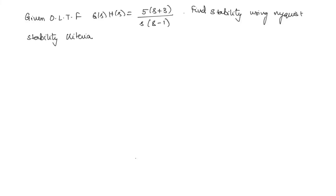We'll do a few examples so that it will become more clear. Given open loop transfer function GH is 5 times (s+3) divided by s times (s−1). Find stability using Nyquist stability criteria.